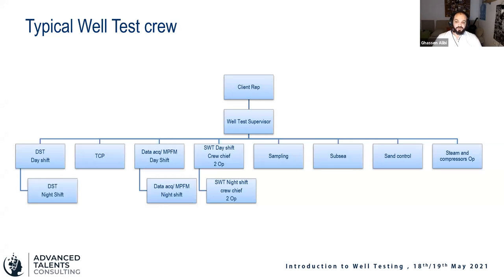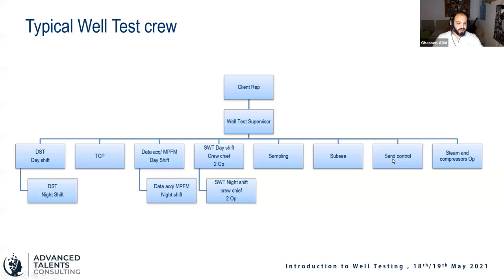If we have DST — drill stem testing — we'll have DST guys handling the tubing-conveyed equipment: packers, downhole valves, and related tools. If we have perforation, that's TCP — tubing conveyed perforation. We'll also have a sampling specialist, and if we're on a semi-submersible or drill ship, a SAPC specialist. For sand production we may need sand control people using sand filters or cyclonic desanders. And of course support equipment like steam generators and compressors require dedicated teams.